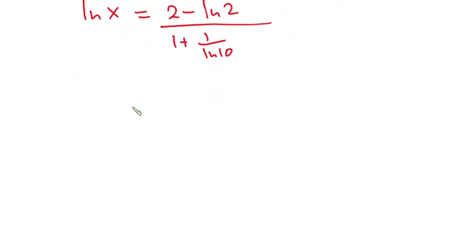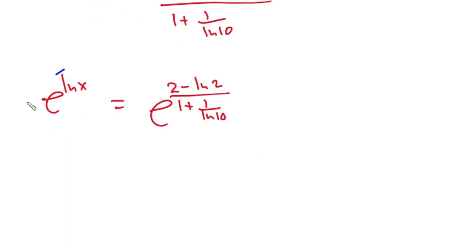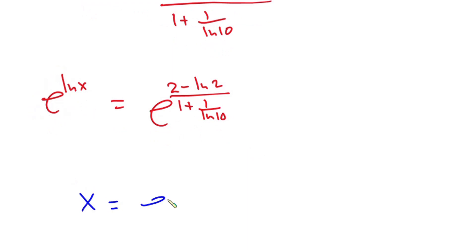Now let's introduce e on both sides of the equation, so we have e to the power of natural log of x is equal to e to the power of (2 minus natural log of 2) over (1 plus 1 over natural log of 10). The left side simplifies since e and natural log undo each other, giving us x equals e to that power.